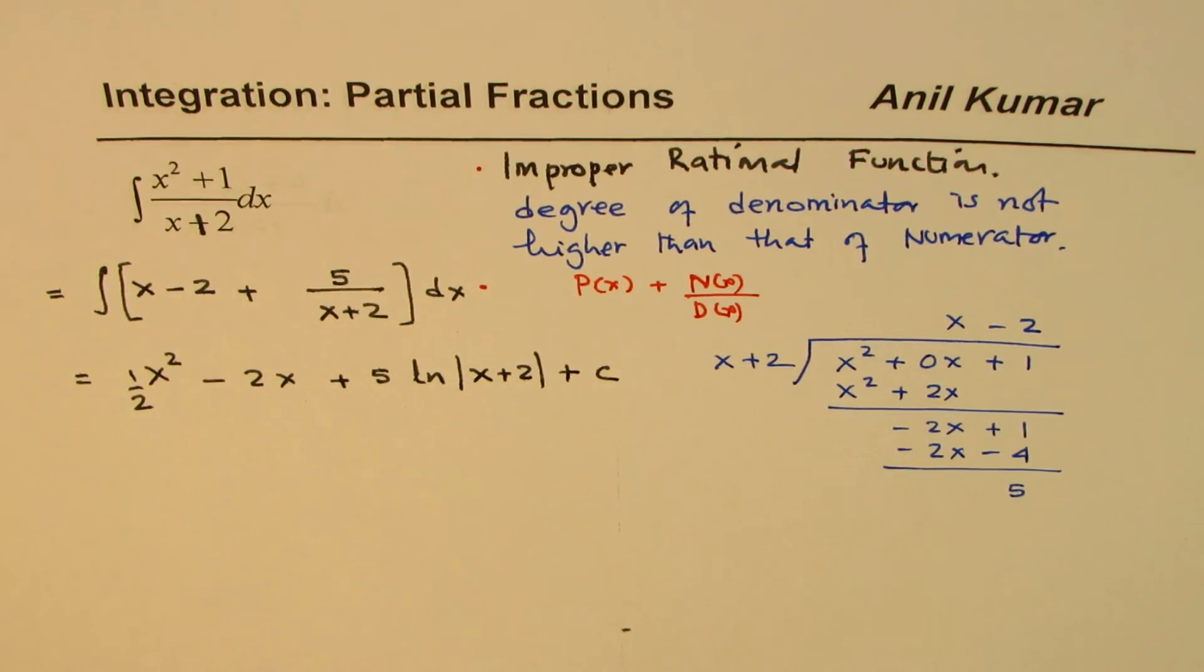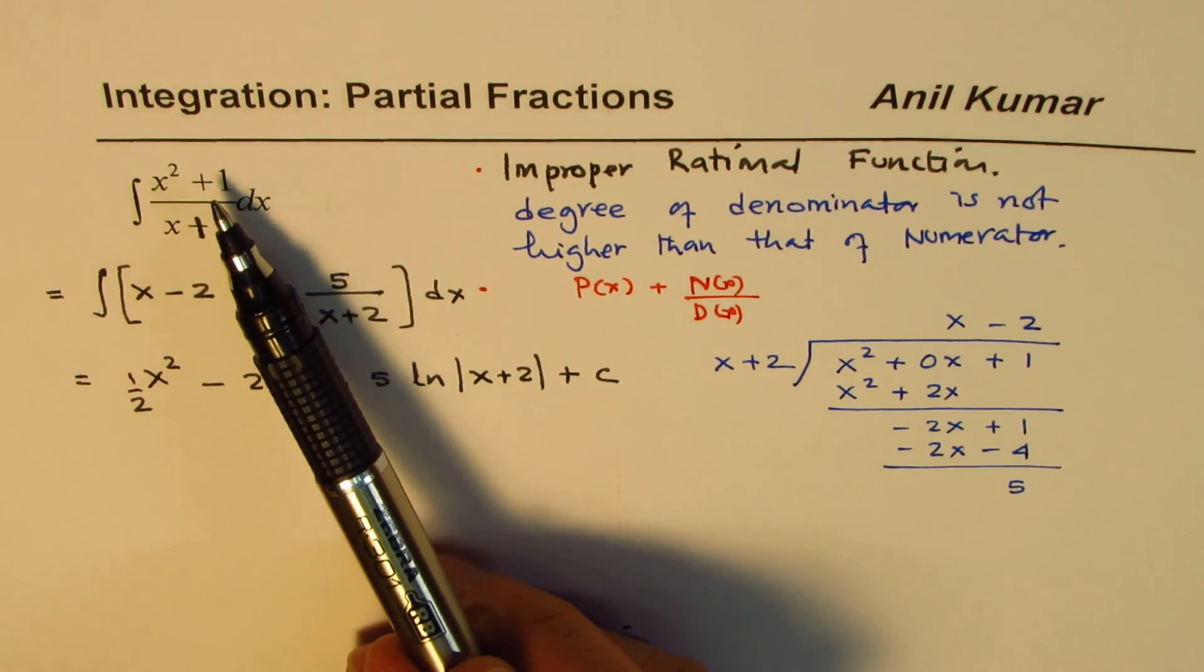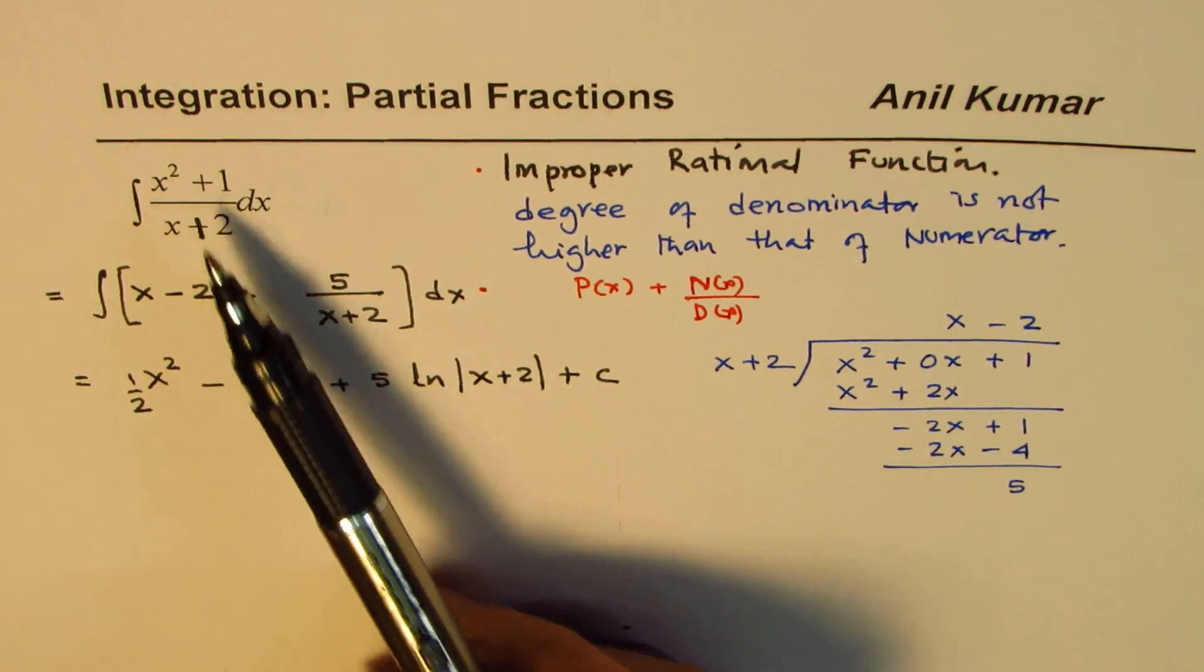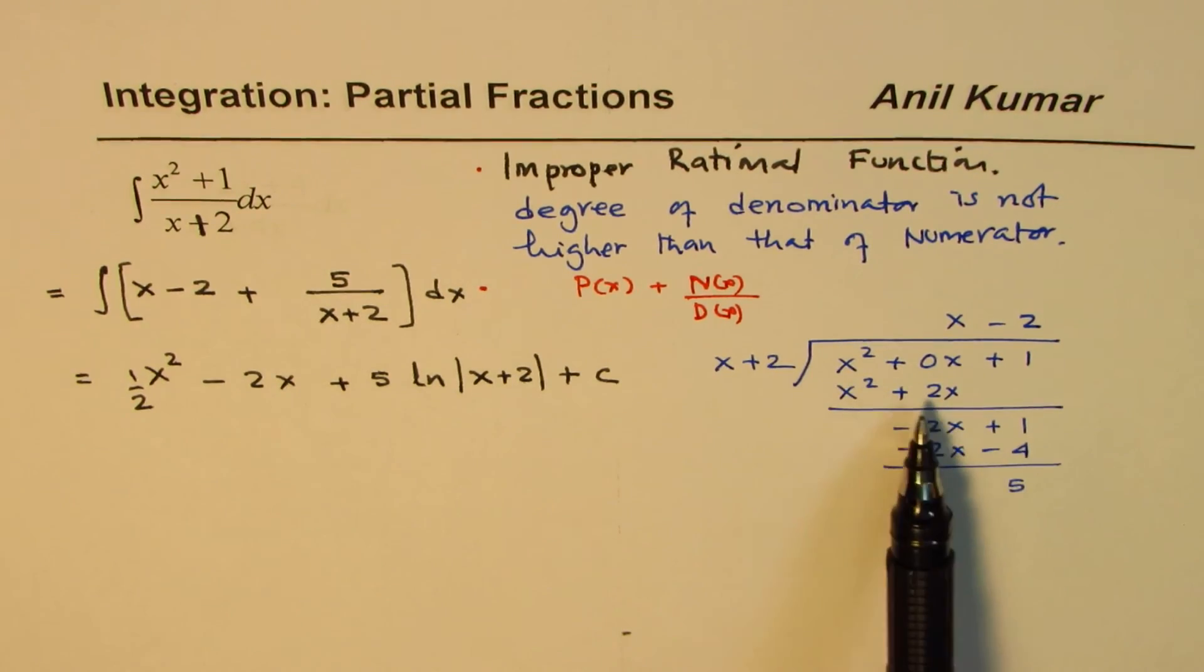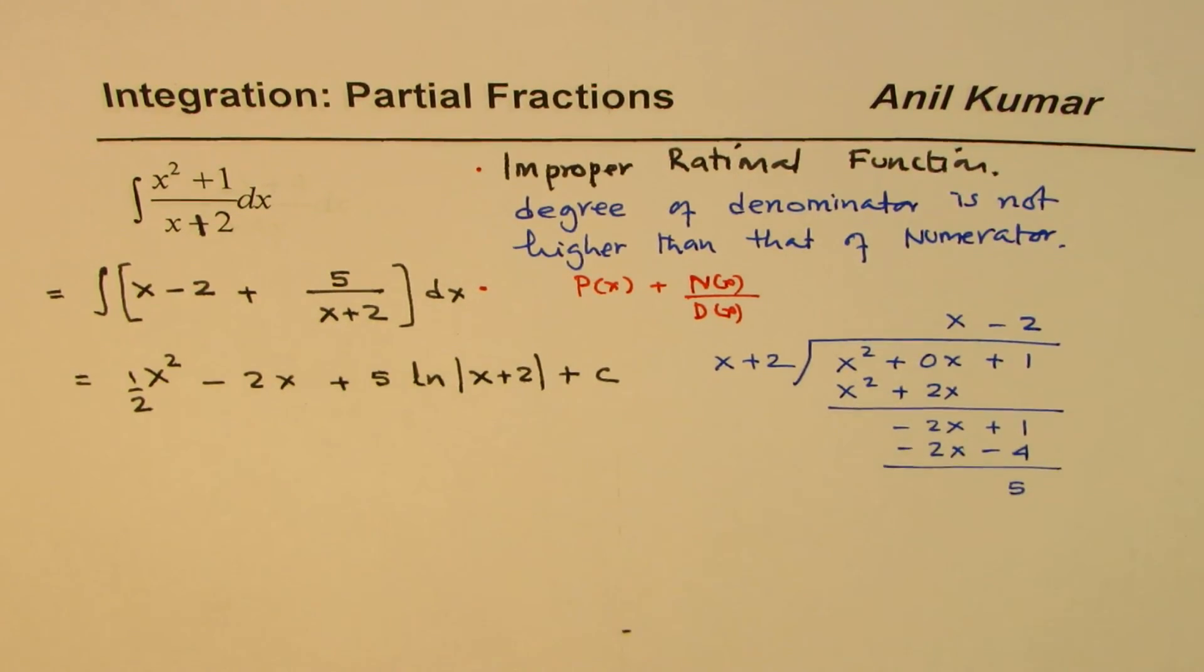So that becomes the answer for the given question. So that is how you could actually easily integrate such rational functions. So remember, whenever the degree of numerator is higher or same, you should do this long division, simplify, and then get the answer. I hope that is clear.